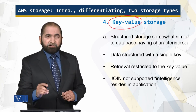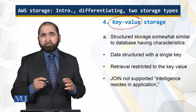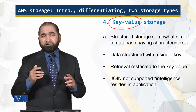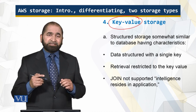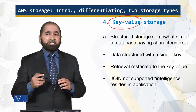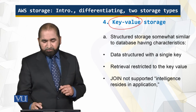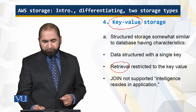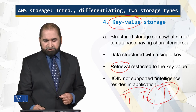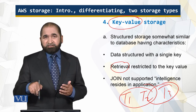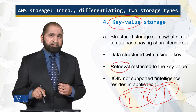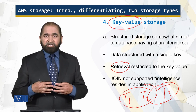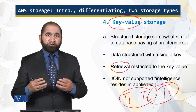Key-value storage is somewhat similar to databases because there is a key associated with records. However, if you are looking at records without a key, you have to scan through all records. Retrieval is restricted to the key value. Additionally, if you need to combine tables — table 1, table 2, table 3 — and perform a JOIN, that is not supported in AWS key-value storage. You have to do extra work to combine data and generate a comprehensive joint result.